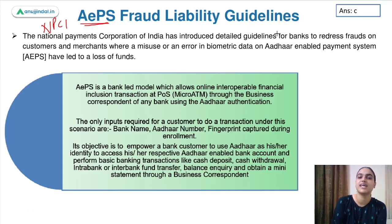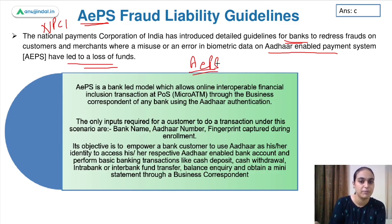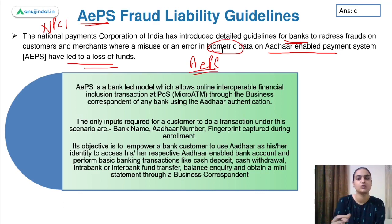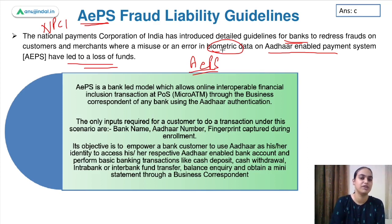These guidelines are for banks to redress the frauds on customers and merchants where a misuse or an error in biometric data on Aadhaar-enabled payment systems has led to loss of funds. AEPS stands for Aadhaar-enabled payment system. This data was getting misused and funds were being siphoned elsewhere, so guidelines were needed to handle such frauds and compensate customers.